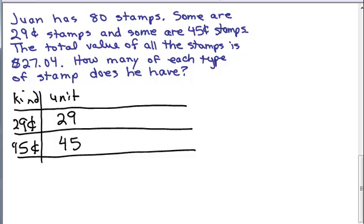If you want to do things in dollars and cents, then I would put 0.29 and 0.45. When I'm working with money, I usually do everything in cents to avoid decimals, but that's a personal preference.